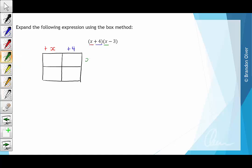The x in the second bracket which we'll put next to the first row. And finally the negative 3 over the second bracket which will sit on the second row.